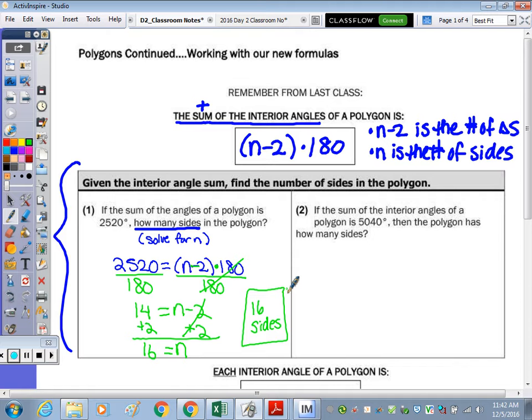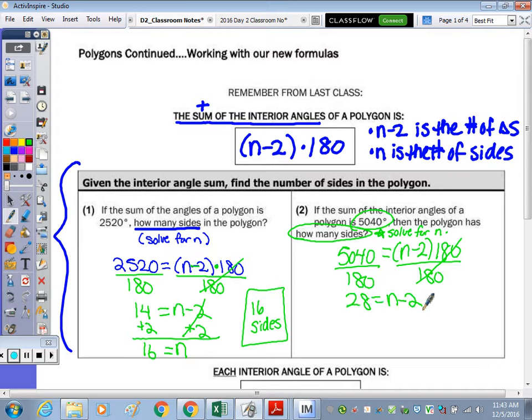Number two, if the sum of the interior angles of a polygon is 5040, then the polygon has how many sides? Same idea. We know they all add up to 5040, so that equals (n-2) times 180 because we're looking for how many sides again. So we're going to solve for n. Divide by 180, the same process to isolate n. Divide both sides by 180 first, and then add 2 to go backwards. 5040 divided by 180 is 28. Then add the 2 to get n by itself, and n equals 30. So there are 30 sides.